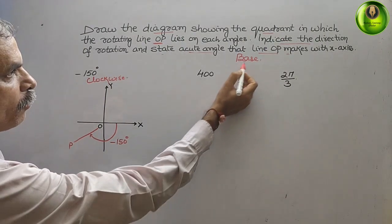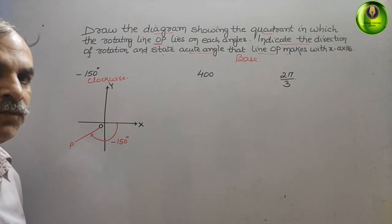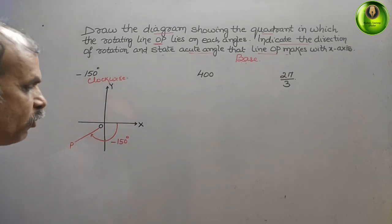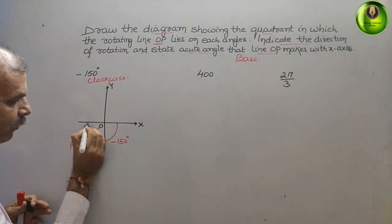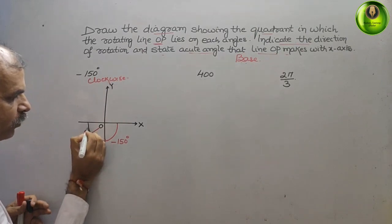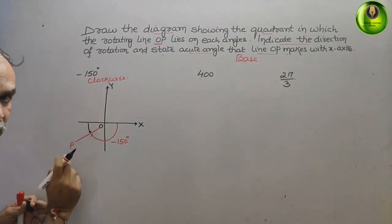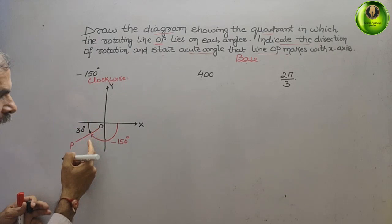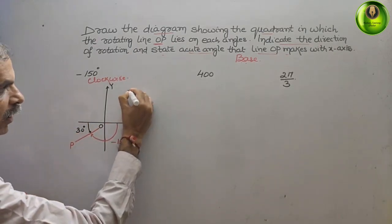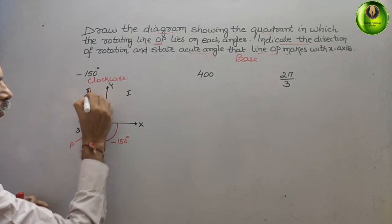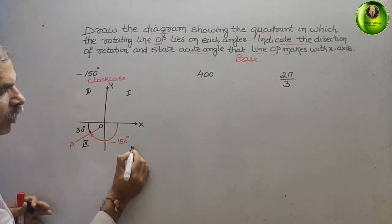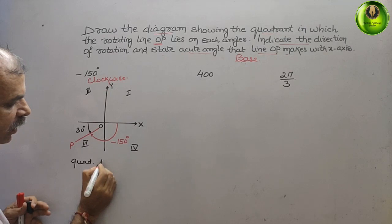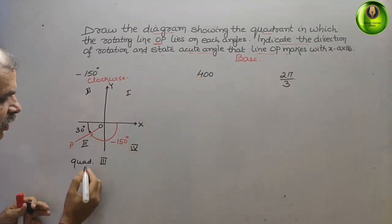Now they have told us to find the base angle — the shortest angle OP makes with the x-axis. The total is 150 degrees, so the remaining angle from P to the x-axis is 180 minus 150, which is 30 degrees. The direction is clockwise, and it falls under the third quadrant.